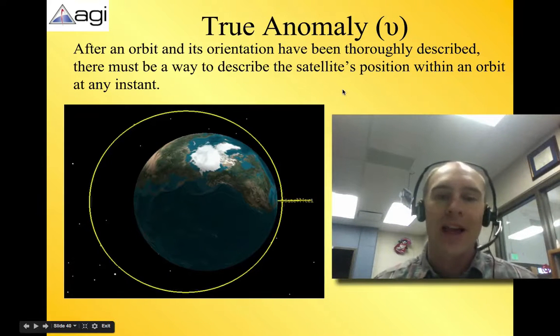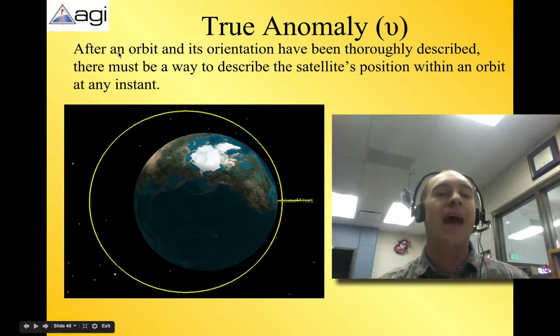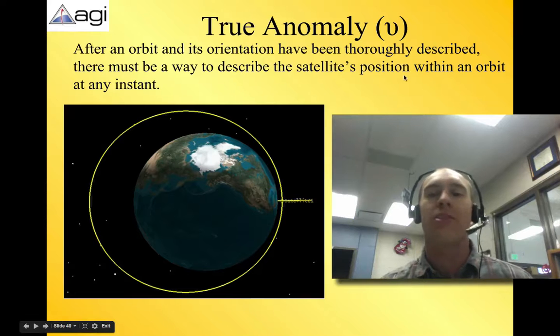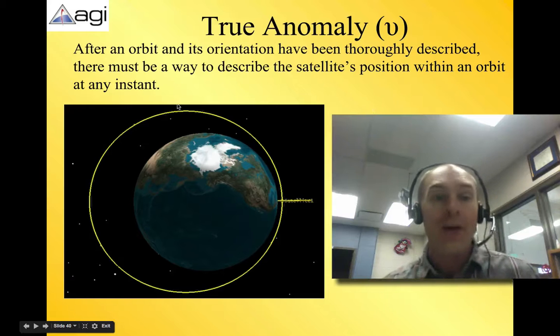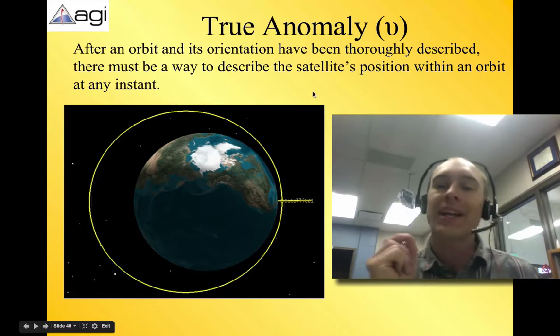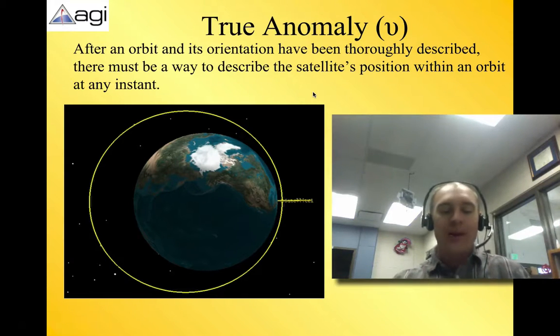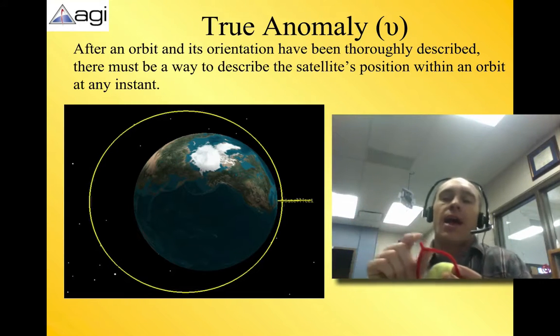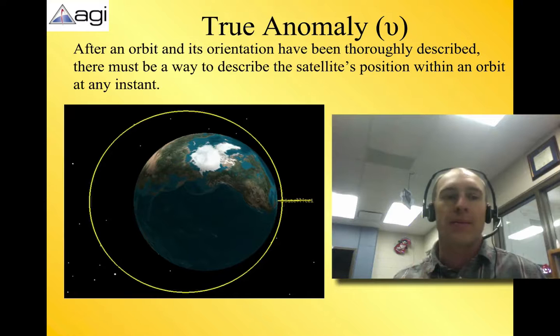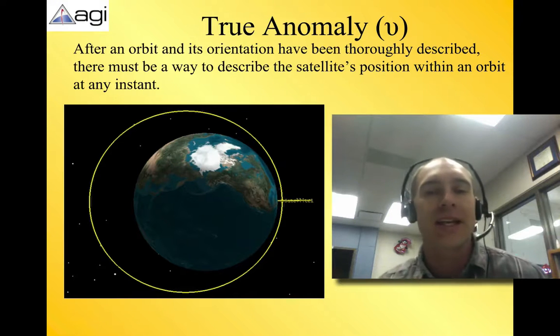True anomaly is the last piece, and this is basically, after an orbit and its orientation have been thoroughly described, using all of those other options, or criteria, there has to be a way to describe where it is on that orbit. Where is my satellite exactly right now? And that is true anomaly. The true anomaly is where its location is at any given instant.